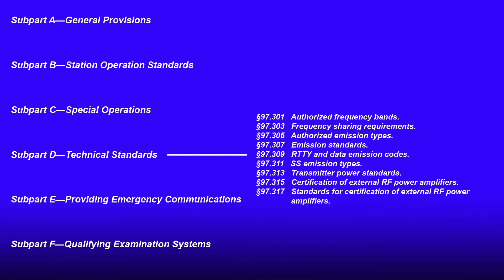Subpart D has technical standards in it, including authorized frequency bands, frequency sharing requirements, authorized emission types, emission standards, digital data emissions codes, SS emissions types, transmitter power standards, certification of external RF power amplifiers, and standards for certification of external power amplifiers.